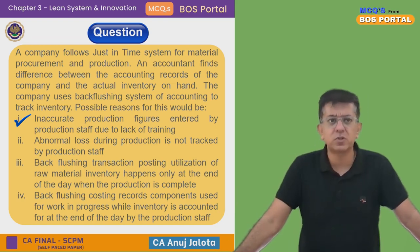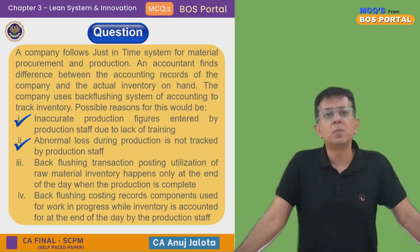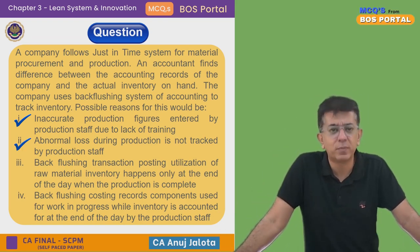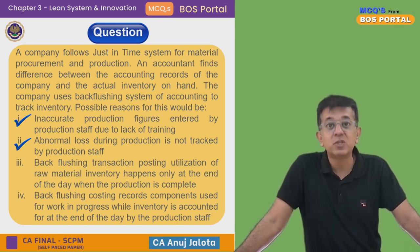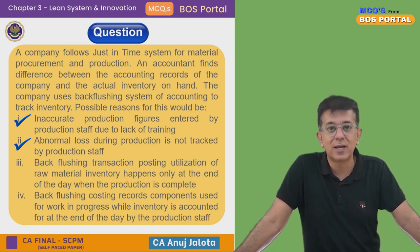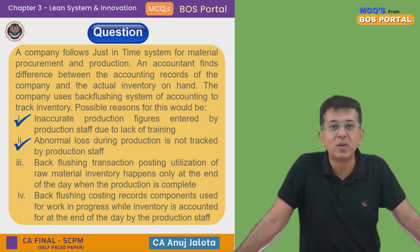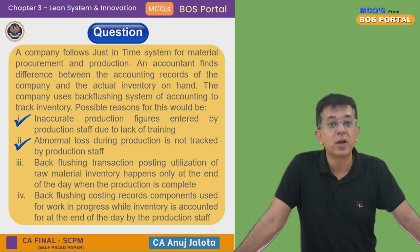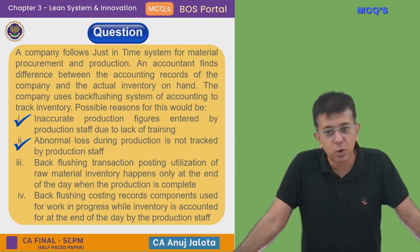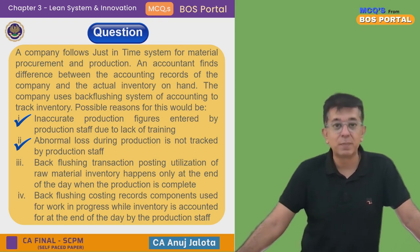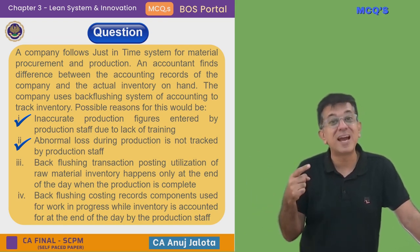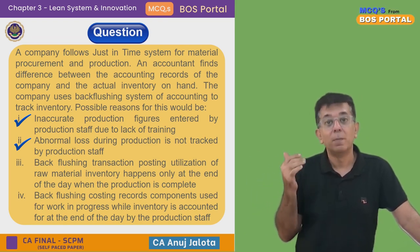Second reason: abnormal loss during production is not tracked by the production staff. If there is some abnormal loss that is not tracked, your actual stock and the stock as per books will be wrong. For example, if five units of raw material got wasted, that amount of stock should be reduced — it must be adjusted in the closing stock. If it was not recorded, your stock will be wrong.